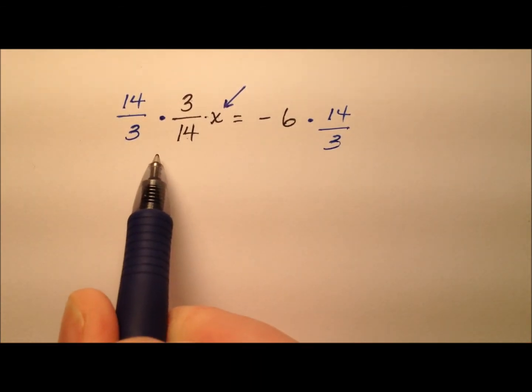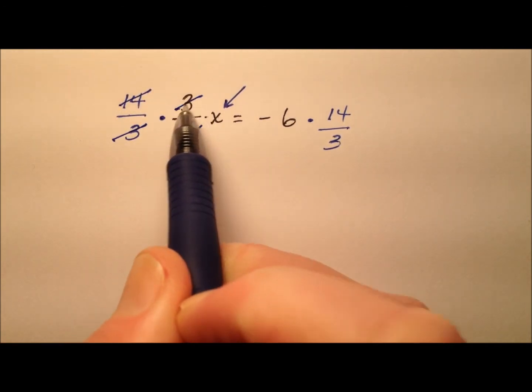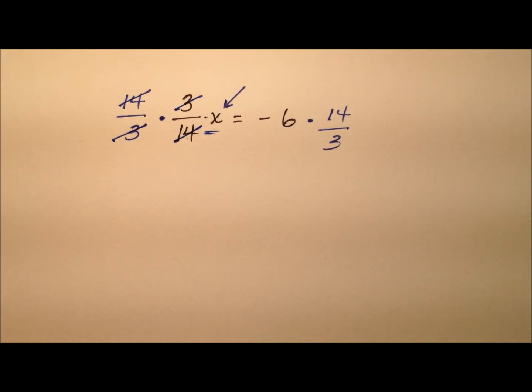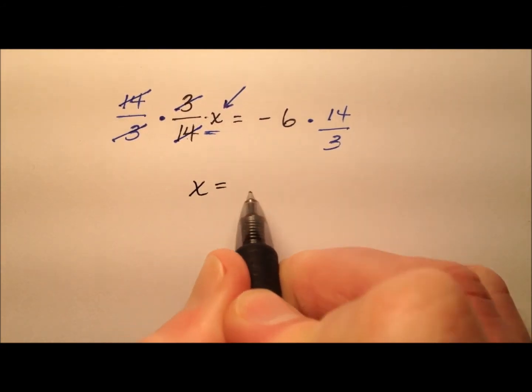And in doing so, we see that the 14s will cancel, and the 3s will cancel, the x will be by itself on the left side of the equation, so x equals,